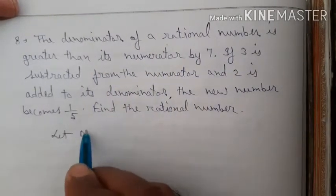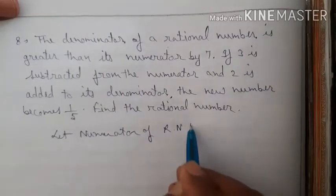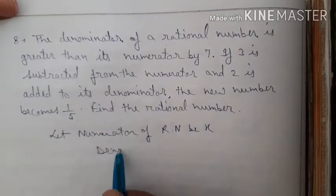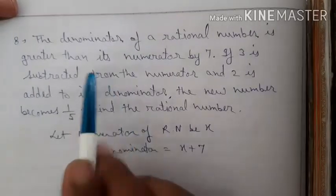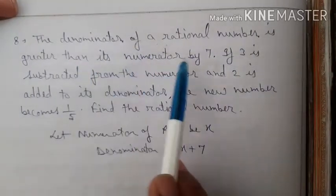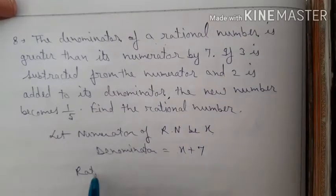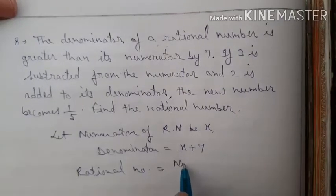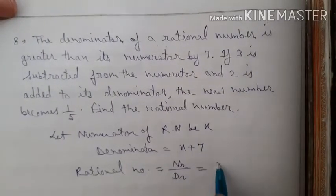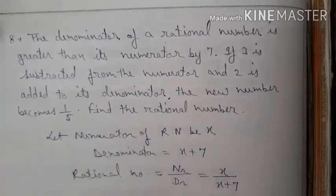Let the numerator of the rational number be x. Therefore the denominator equals x plus 7, because the denominator is greater than the numerator by 7. So the rational number is x by (x plus 7).